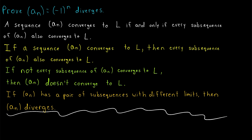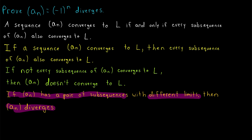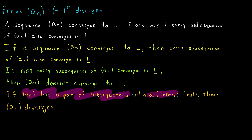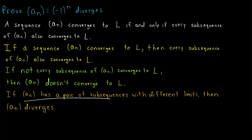For now, I just want to focus on how we have a quick method to prove this sequence diverges. We can say that if a sequence has a pair of subsequences with different limits, then that sequence diverges — and that is slick. This is because if two subsequences have different limits, then not every subsequence can converge to any given real number. If every subsequence converged to a particular real number, we certainly wouldn't be able to find a pair with different limits. So if we can find a pair of subsequences with different limits, we've got a divergent sequence.